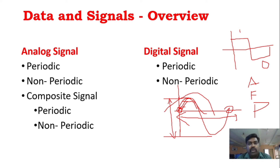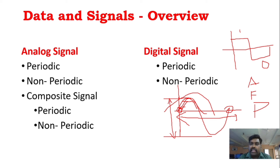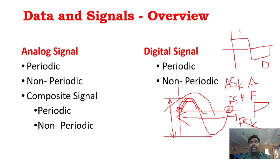The modulating signal is the message signal. The message signal and the carrier signal combine to produce the modulated signal — the output waveform. You need to technically understand: what is message signal, what is carrier signal, what is modulating signal, and what is modulated signal? In digital communication you have ASK, FSK, and PSK — amplitude shift keying, frequency shift keying, and phase shift keying. Amplitude shift keying is the same process as amplitude modulation, frequency shift keying corresponds to frequency modulation, and phase shift keying corresponds to phase modulation.